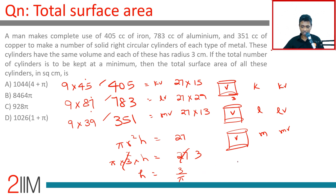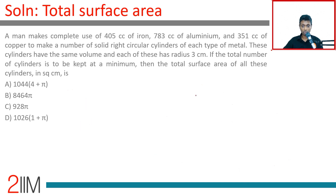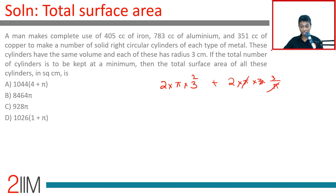The surface area of one cylinder is 2πr² + 2πrh. With r = 3 and h = 3/π: 2π(3²) + 2π(3)(3/π) = 2π × 9 + 2 × 3 × 3 = 18π + 18 square centimeters.